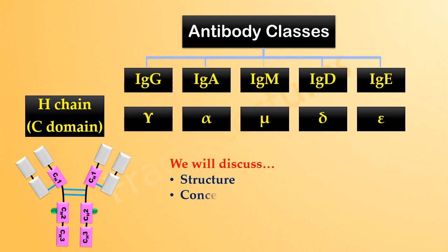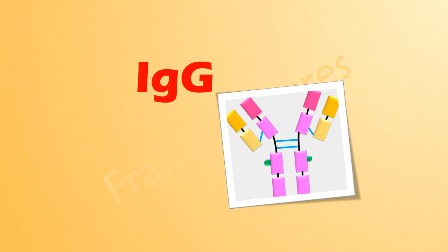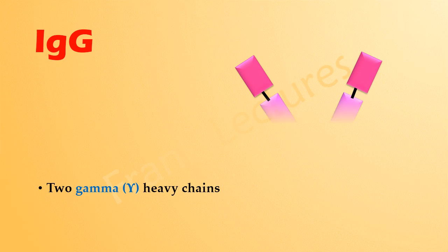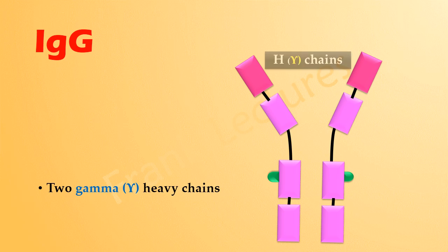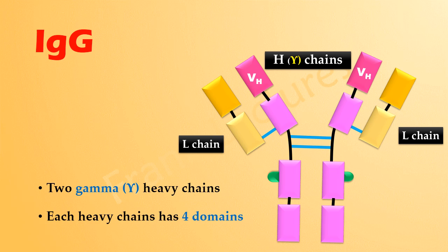We will talk about their structure, concentration and half-life in serum, their important features and their mechanism of action. Let's begin with immunoglobulin G. Structurally, IgG antibody is made up of two gamma heavy chains and two light chains. These chains are held together by disulfide bonds. Each heavy chain has four domains — one variable domain at the N-terminal and three constant domains. Immunoglobulin G is a monomer.